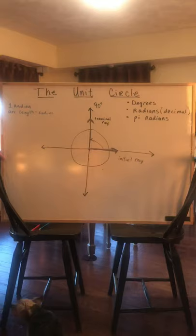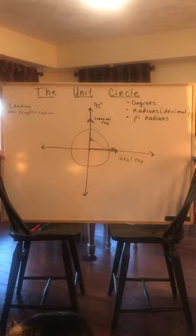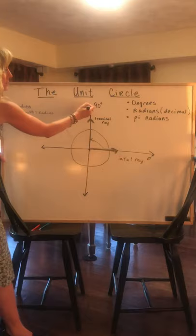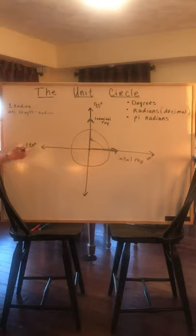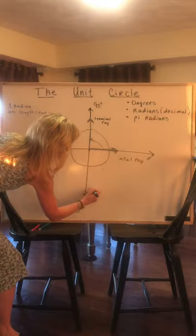I already put in my initial ray and we are going to call that zero degrees. This is 90 degrees. If I go another 90 degrees I'll go to 180 degrees. If I go another 90 I'm down here at 270 degrees.